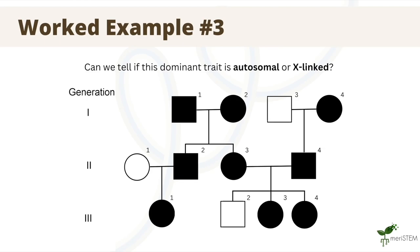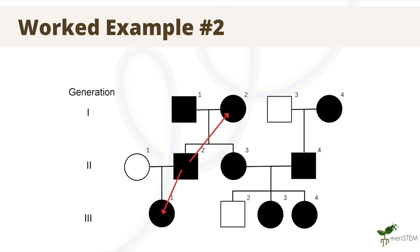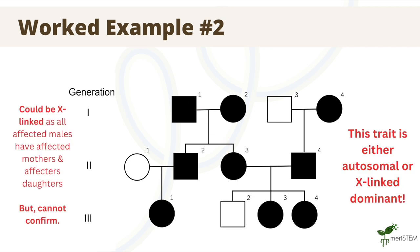Let's look at another example. This question asks us to determine whether this trait shown in this pedigree is autosomal dominant or X-linked dominant. First, let's look at the second generation, Individual 2, who is an affected male. All of his daughters and his mother are also affected — this holds true to dominant X-linked patterns in pedigrees. This same pattern holds for the other affected males as well. Consequently, this trait could be X-linked, but as stated before, this does not disprove that it is autosomal. So we say that this trait could be X-linked or autosomal.